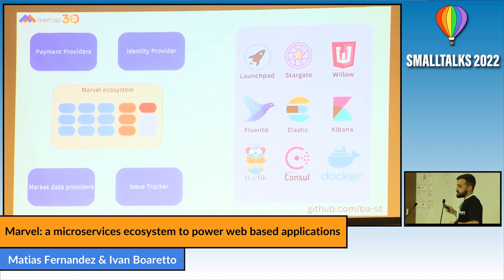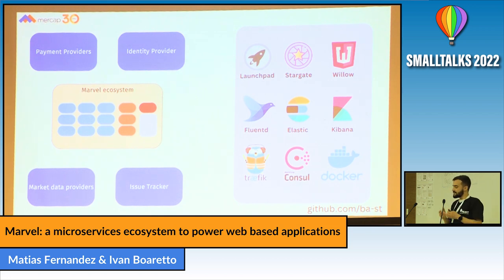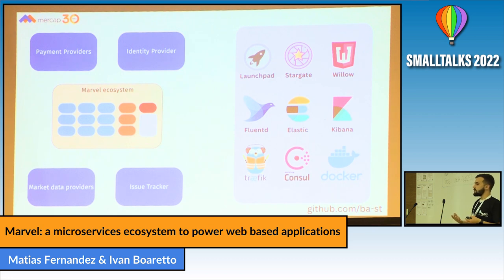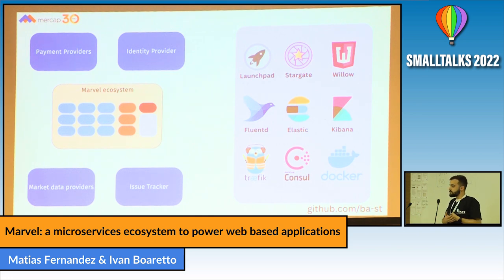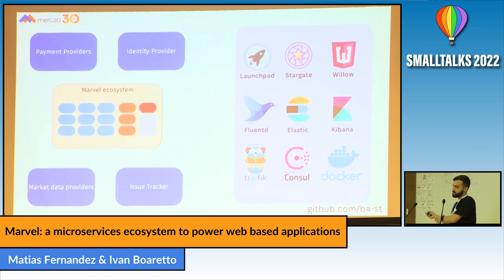The first three are some of our in-house developed libraries that are also open source and public on BAST. The first one is Launchpad — it enables us to easily launch and specify how to launch a service or an instance. Then there is Stargate, which is really important in this architecture because it allows us to easily define REST APIs so we can interconnect any instance of each service with another service or maybe with an external service. And Willow, which is the front-end implementation written in Smalltalk — it's a library that allows you to write web applications that render in HTML and JavaScript.